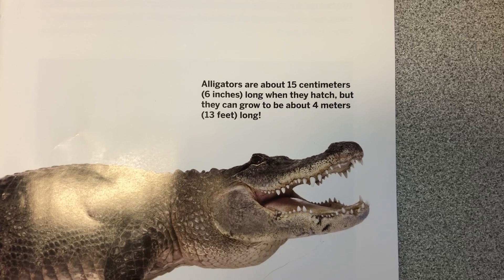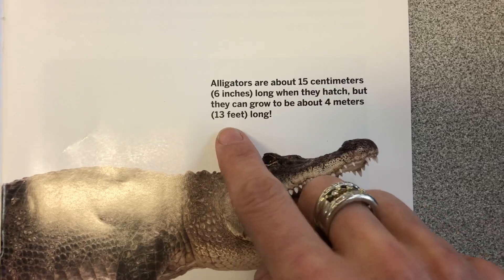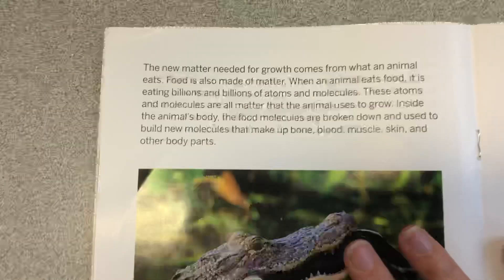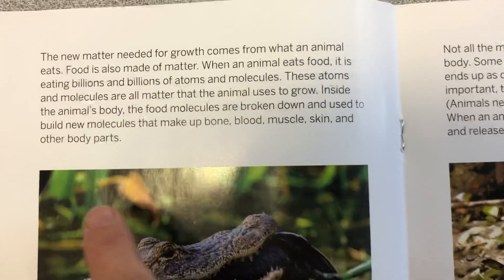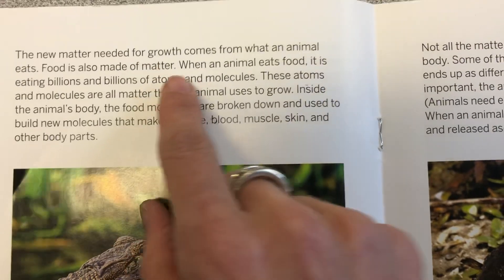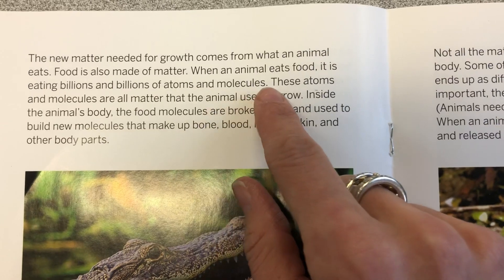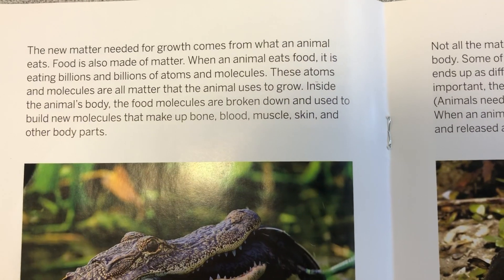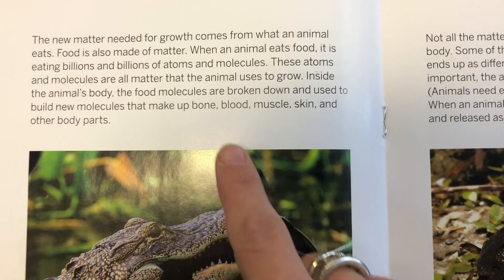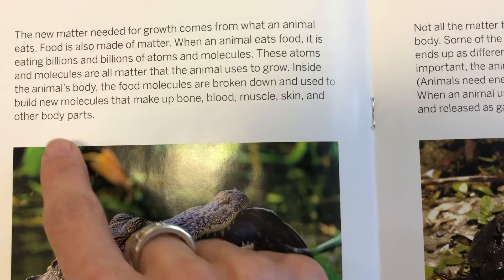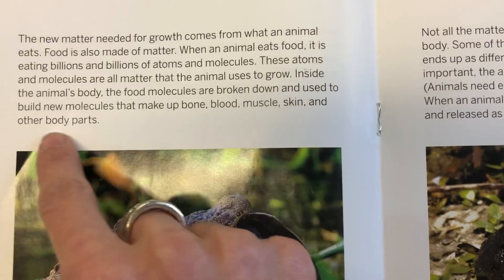Alligators are 15 centimeters long when they hatch, but they can grow to about 4 meters, or 13 feet long. The new matter needed for growth comes from what an animal eats. Food is also made of matter. When an animal eats food, it is eating billions and billions of atoms and molecules. These atoms and molecules are all matter that the animal uses to grow. Inside the animal's body, the food molecules are broken down and used to build new molecules that make up bone, blood, skin, muscle, and other body parts.